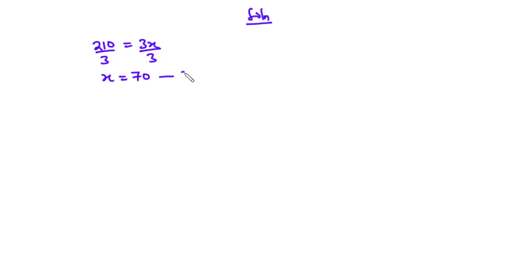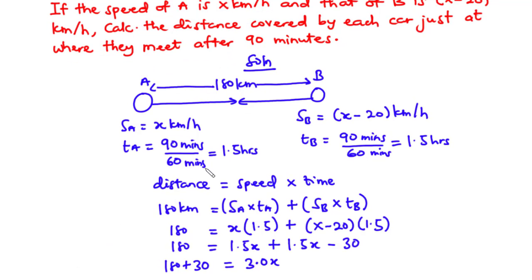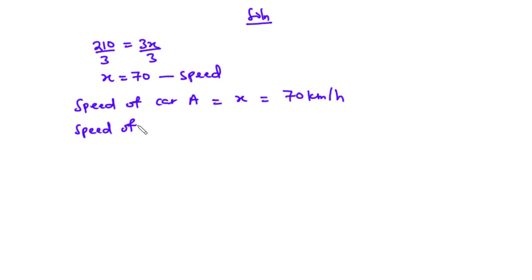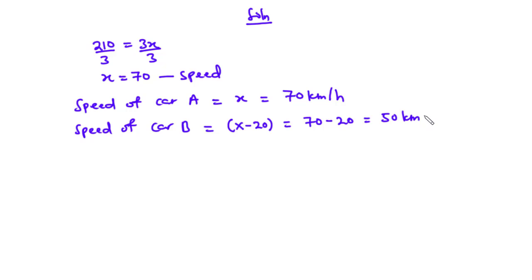This value of x represents speed. From the question, the speed of car A is x kilometers per hour and the speed of car B is x minus 20 kilometers per hour. Therefore, the speed of car A is 70 kilometers per hour, and the speed of car B is x minus 20 = 50 kilometers per hour.